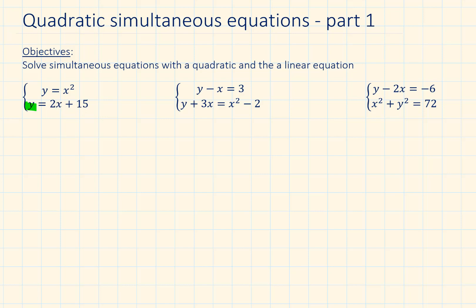In our case, we are lucky because y is already the subject, so we don't have to do anything to it. What we are going to do next is replace the y value in the quadratic equation with whatever the actual y value is in the second equation. The ones that are highlighted are the same — they are equal to each other — so we might as well just plug in 2x plus 15 into the first equation.